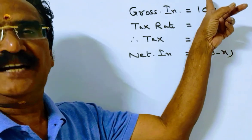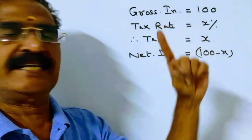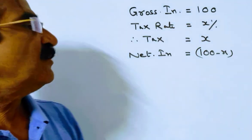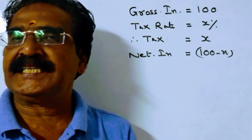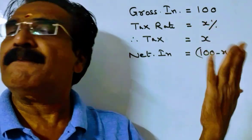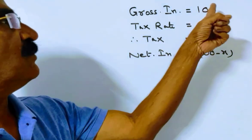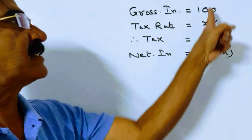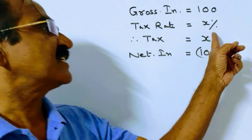Tax equals x percent of 100, which is x/100 times 100 equals x rupees. So friends, now net income is equal to gross income minus income tax. Gross income minus income tax is 100 minus x. So friends, now tax is x and net income is 100 minus x.